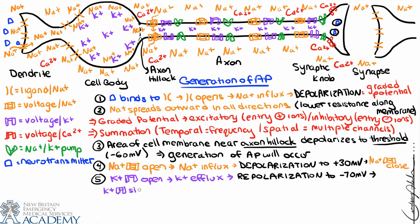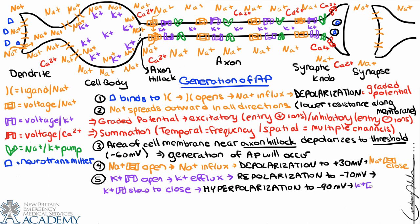The thing about potassium channels is that they're a little bit slow to close. They want to close at minus 70, but there's a brief delay between when they plan to close and when they actually close. So a few extra potassium ions are able to sneak out, and we get hyperpolarization until we get to about minus 90 millivolts. At minus 90 millivolts the potassium channels actually close, and we won't have any efflux of potassium beyond that.